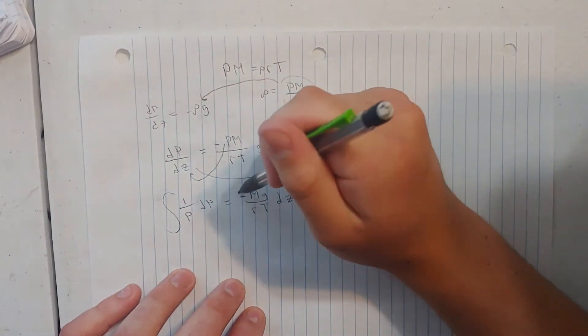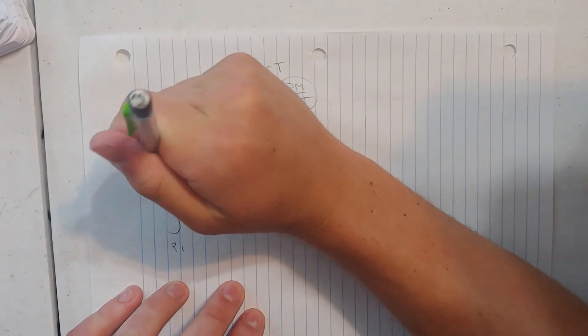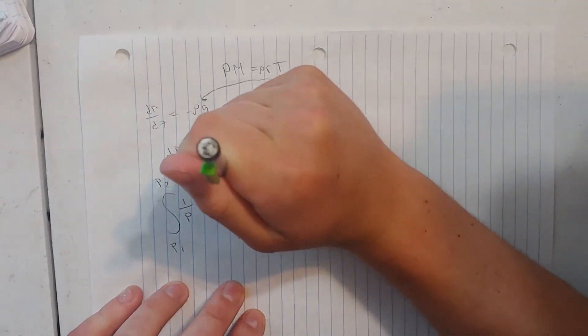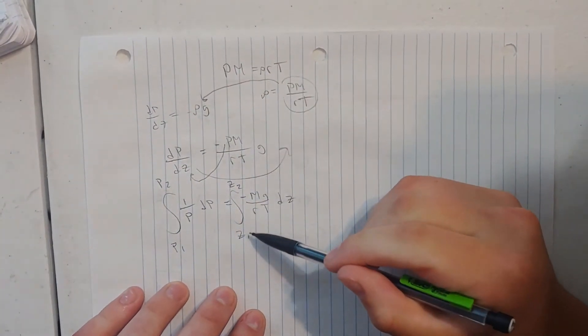So now we're going to integrate both these sides. This side will be done for pressure, this side will be done for altitude, hence our z1 and z2.